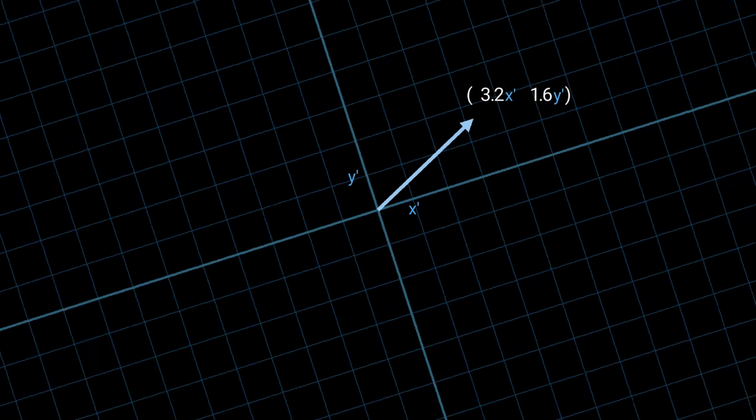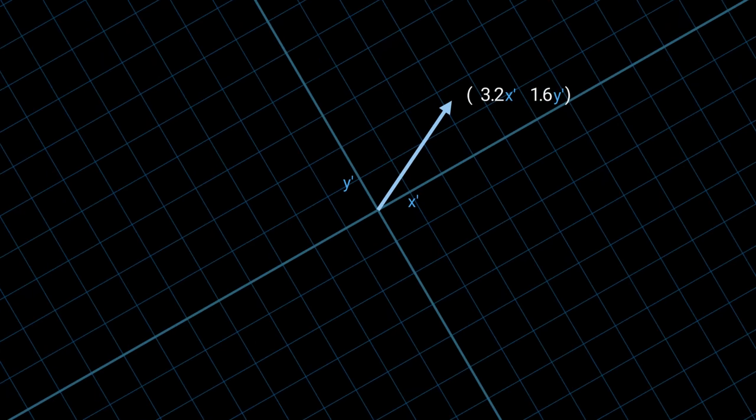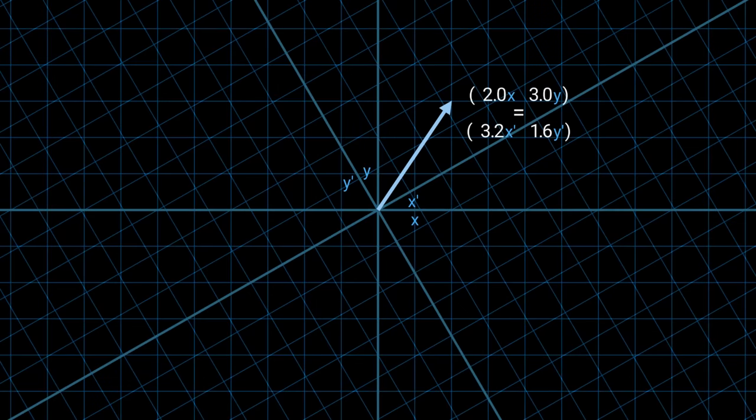But note our vector didn't change. We just changed the coordinate system and rotated the camera. So we can write this equality. These are two different ways to represent the same vector.